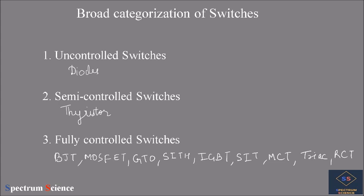On the basis of controllability, power electronic switches are categorized as uncontrolled, semi-controlled, and fully controlled switches. Uncontrolled switches cannot have their on and off states controlled — they are controlled by the power supply, and the diode is an example. Semi-controlled switches allow only the on state to be controlled, while complex commutation circuits are needed to turn them off.